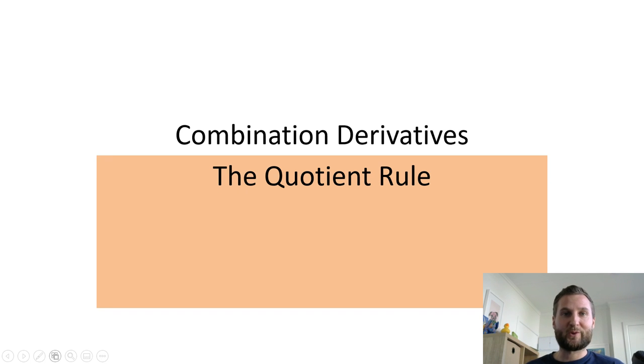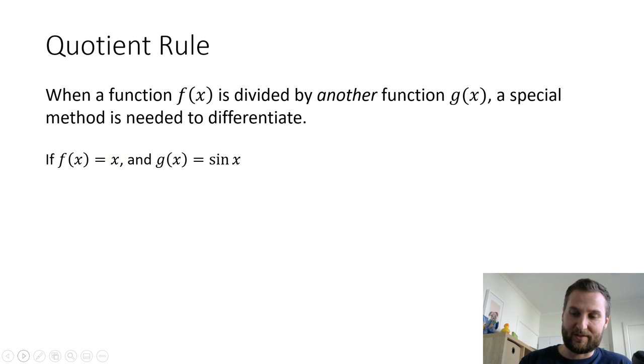Kia ora folks, the quotient rule handles situations where you have a quotient involved, and that's just a fancy word for a fraction. So if you have a function divided by another function, then you will likely need to use the quotient rule if you're looking for the derivative.